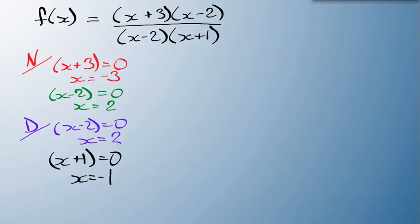Alright, so let's take these and look at when it's going to be, let's start with zero. When is it going to be zero? Now, in order for this whole function to be zero, the numerator is going to be zero. The numerator will be zero whenever x plus 3 equals zero. So it's going to be zero at x equals minus 3.